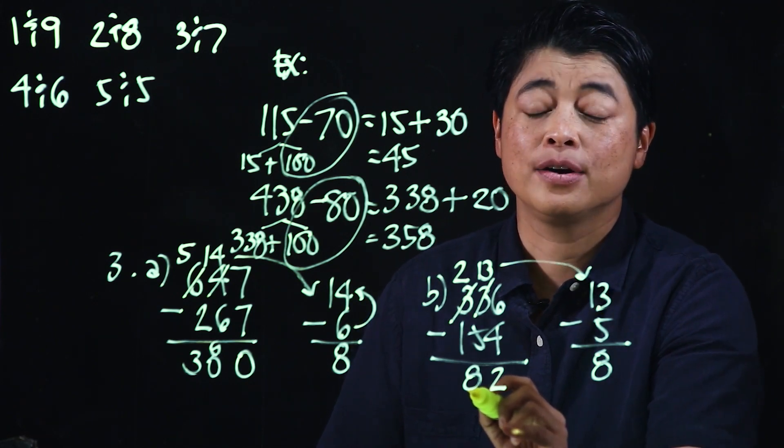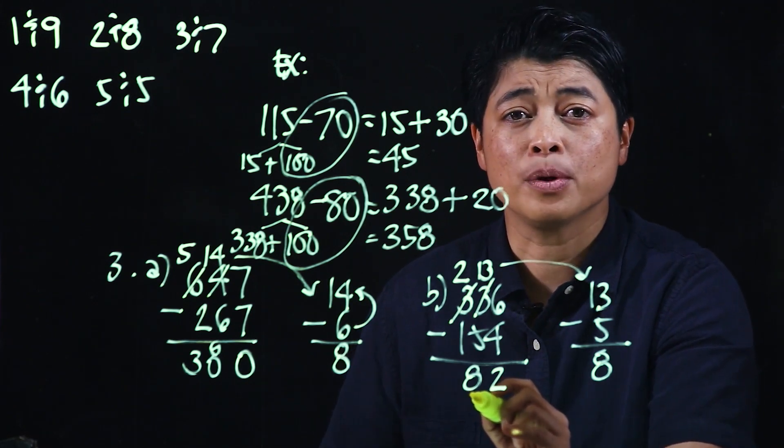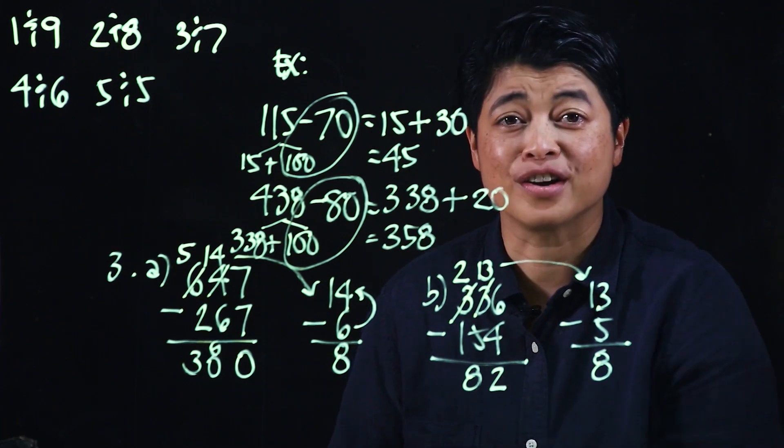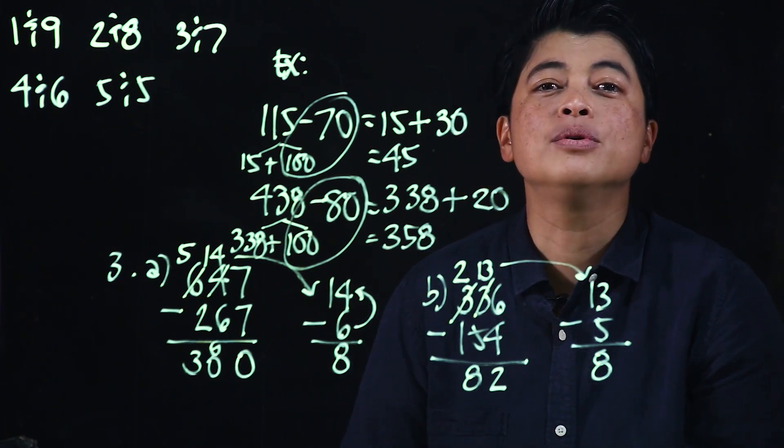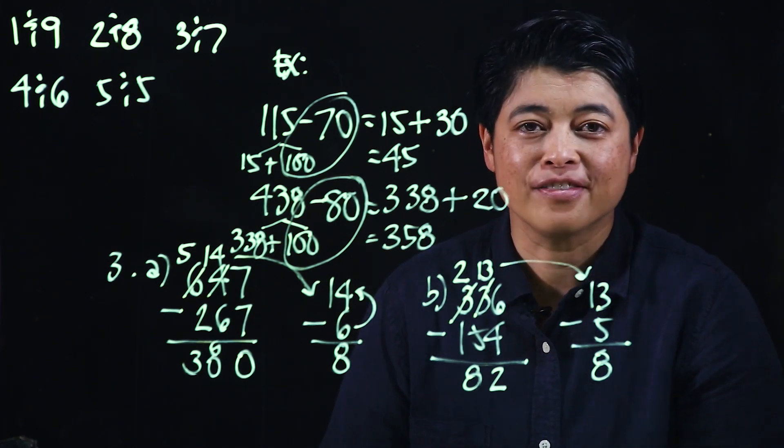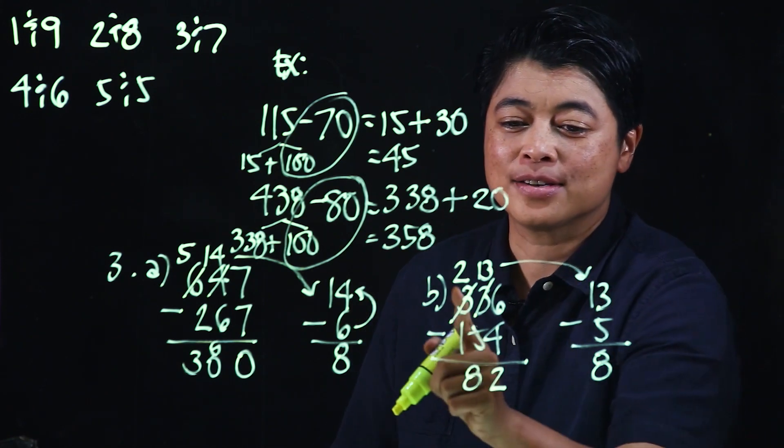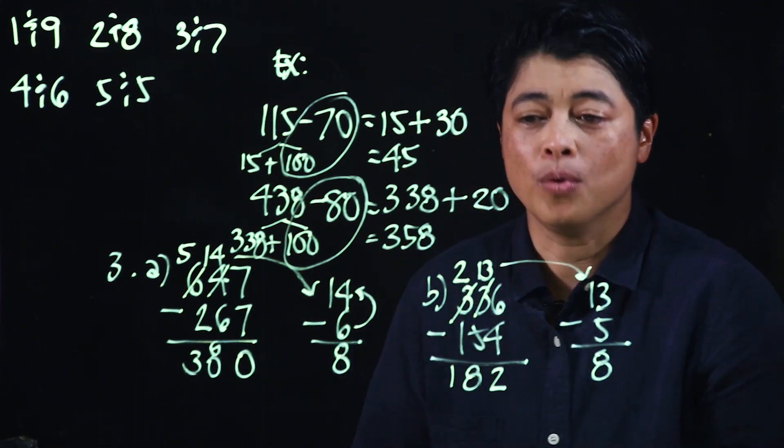Whatever they're comfortable with, we don't want to pressure. They're only in grade 2, they have many, many years of this to come. So 2 minus 1 is 1.